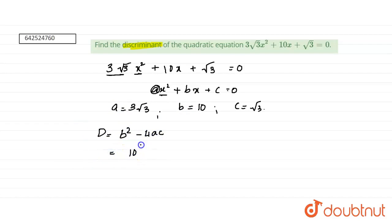b square is 10 square minus 4 into a which is 3 root 3 and c which is root 3. 10 square is 100 minus 4 into 3 root 3 into root 3. Root 3 times root 3 becomes 3 and 3 times 3 becomes 9.